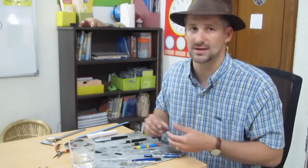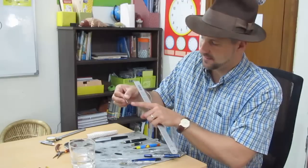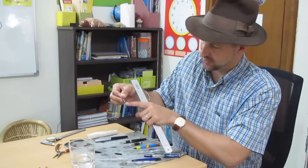Same thing with the nib. Nib numbering is not very helpful. From country to country, nib numbering can be different. So what you'll want to do is you'll want to measure the base of the nib, this narrowest part at the bottom.